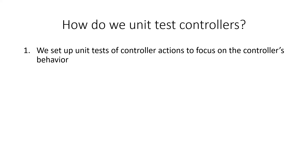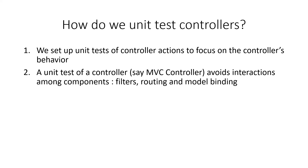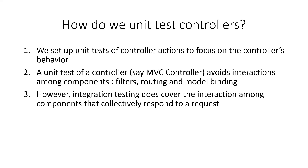Only a single action is tested, excluding the behavior of its dependencies or of the framework itself. When we set up unit tests of controller actions, we focus on the controller's behavior. Each action method in a controller focuses on one behavior — for example, getting the list of all products, or getting a product or student by ID. When unit testing, we are unit testing one action method at a time.